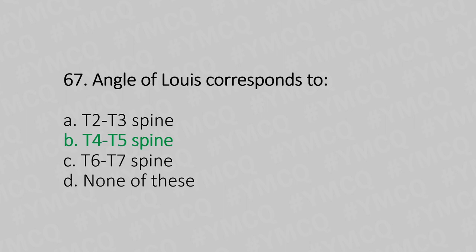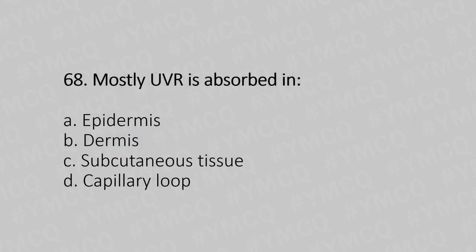Question 68: Most UVR is absorbed in — Option A: epidermis, Option B: dermis, Option C: subcutaneous tissue, Option D: capillary loop. The answer is Option A, epidermis.